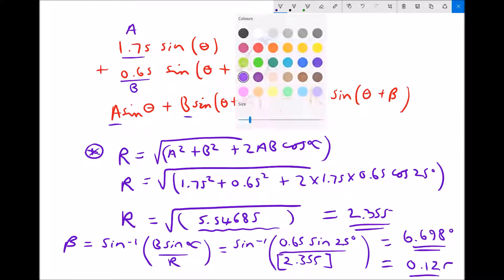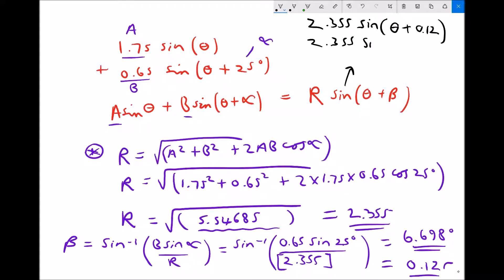So now we can define our final function R sin(θ + β). So our final function is 2.355 sin(θ + 0.12) in radians, or we could express it in degrees: 2.355 sin(θ + 6.7°).